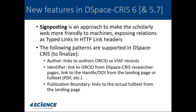There are new features in DSpace-CRIS 6, which has just been released, but they are all supported back to version 5.7. Sign posting, for instance, is an approach to make the scholarly web more friendly to machines by exposing relations in HTTP link headers. Other features include links to ORCID and VIAF records, identifiers linked from researcher pages, DOI links from landing pages, and the publication boundary. There are many new features available in the latest DSpace-CRIS releases.